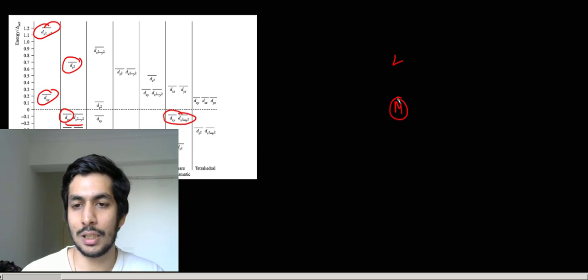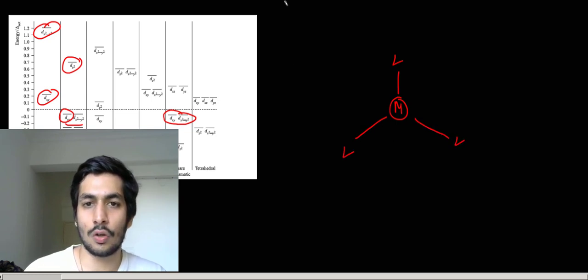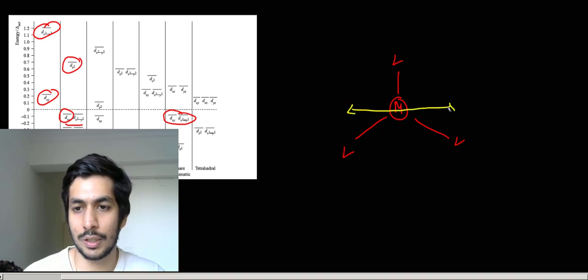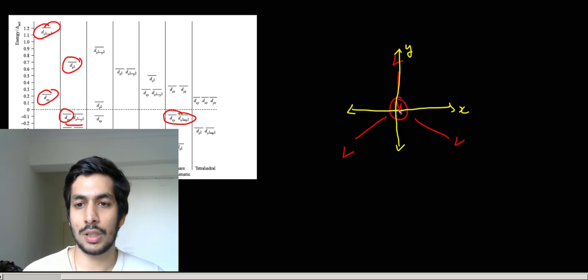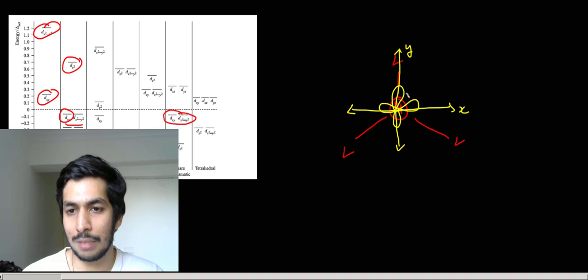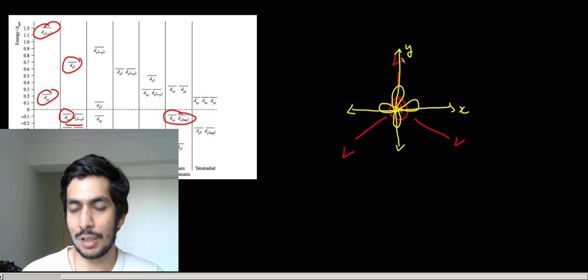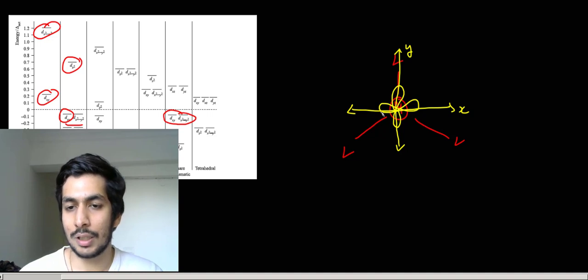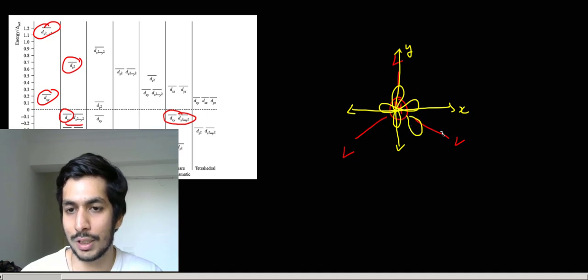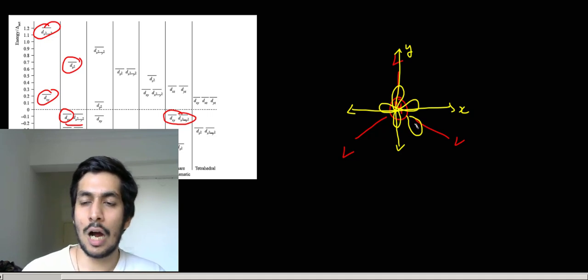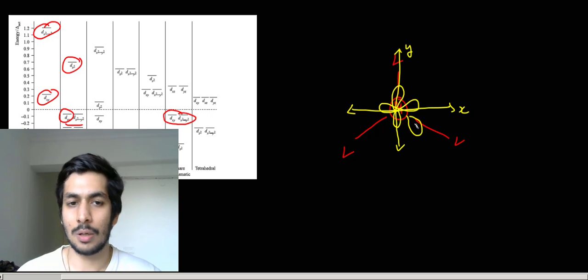For example, with a trigonal planar geometry, we have a metal or central atom with three ligands L. If I draw the x and y axes, the x²-y² orbital lies on the axis while the xy orbital lies in between the axes. So one orbital is directly oriented towards the ligand and the xy orbital is slightly oriented towards the ligand — not directly in the path but somewhere in the path of the ligand.